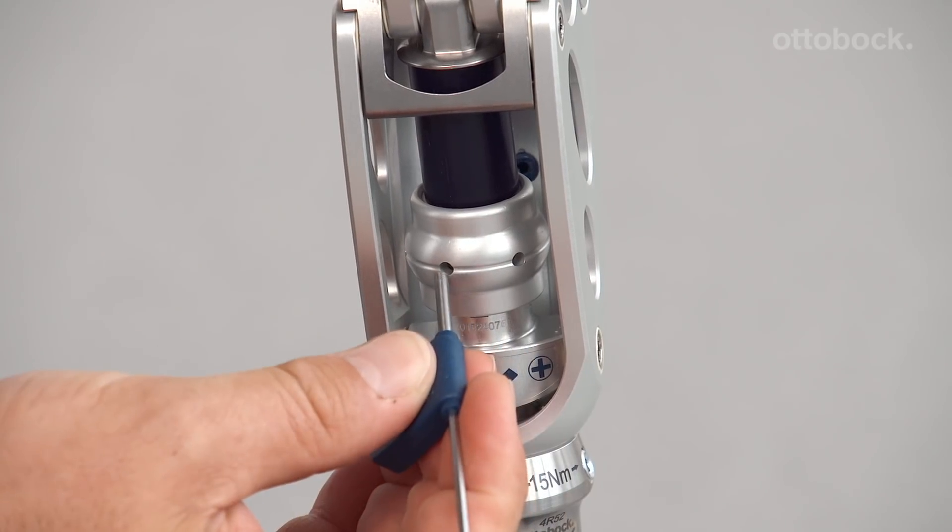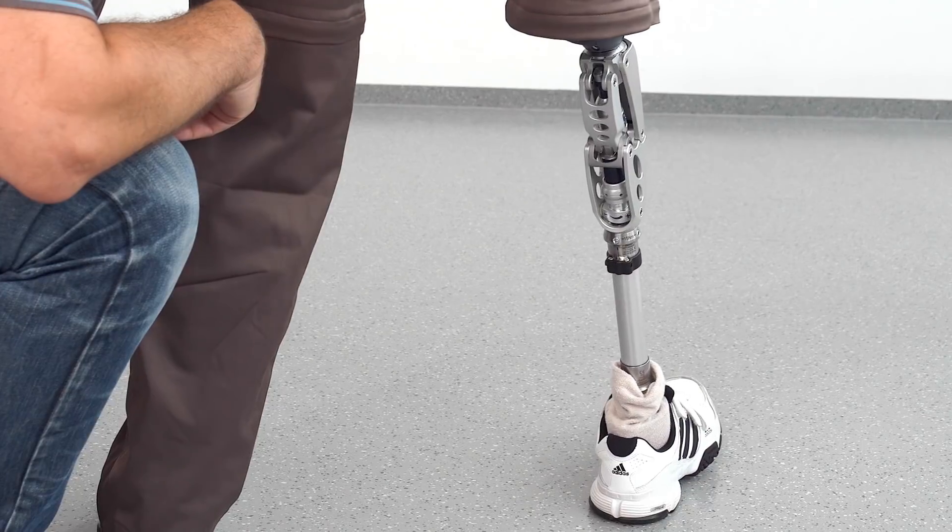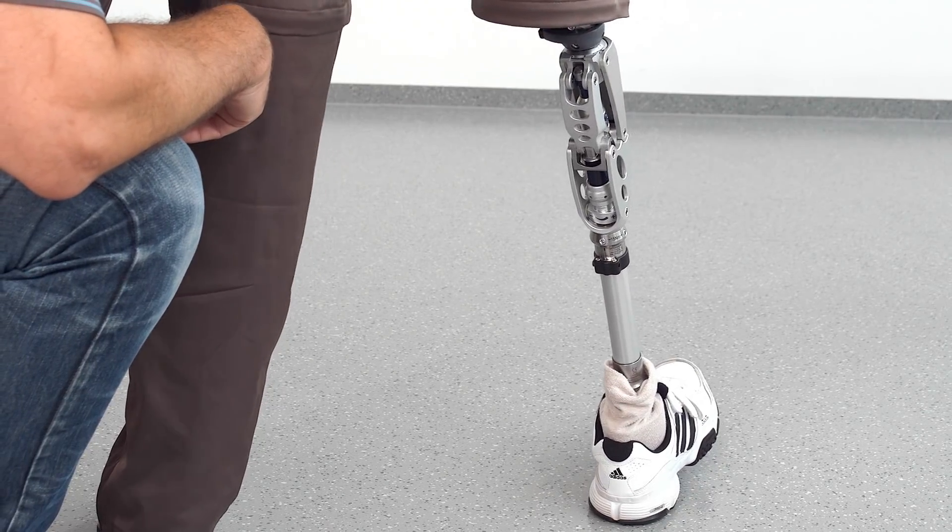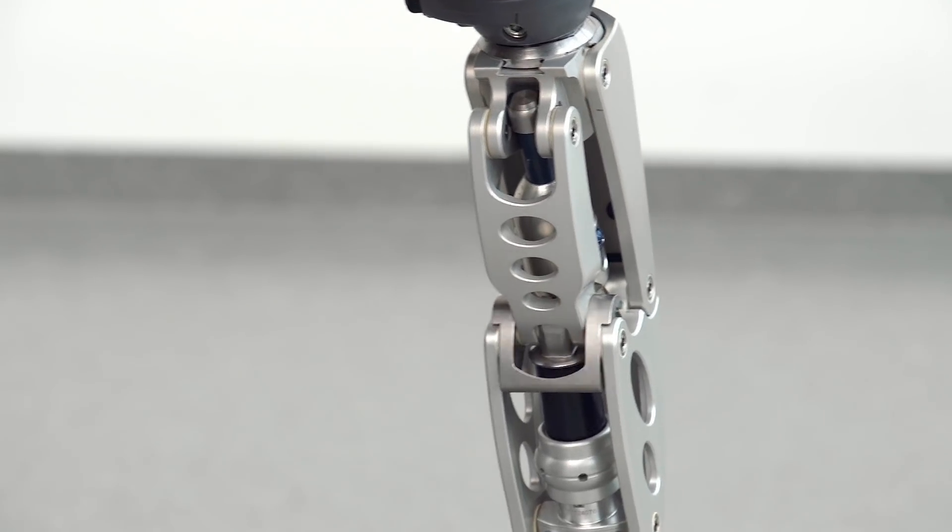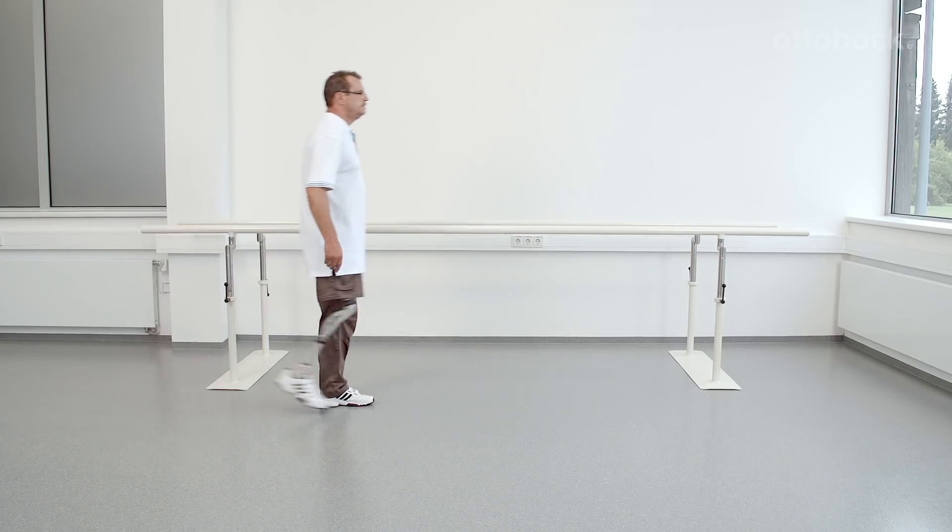Knee flexion is controlled at heel strike by an elastomer element and stance phase flexion is in the range of 0 to 15 degrees. The EBS can be adjusted for different body weights and activity levels via the adjustment ring.